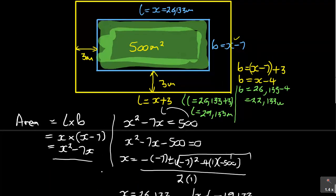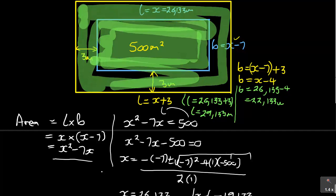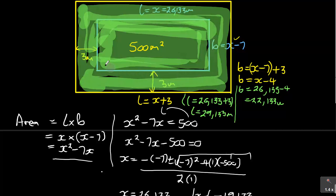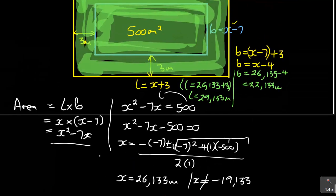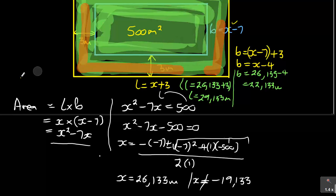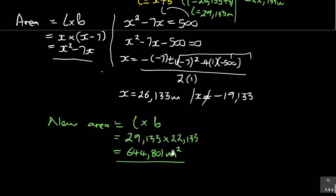The question was find the value of the new area. They are looking for this particular new area — the whole new area. Sometimes they ask what is the increase in the area. If they ask that, that's when you subtract 500 from 644,801. That difference will be the increase in the area. But in this case, they just wanted the value of the new area, and the answer is 644,801 meters squared.